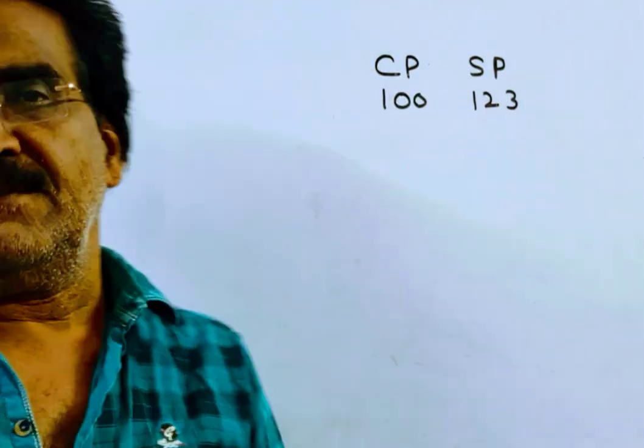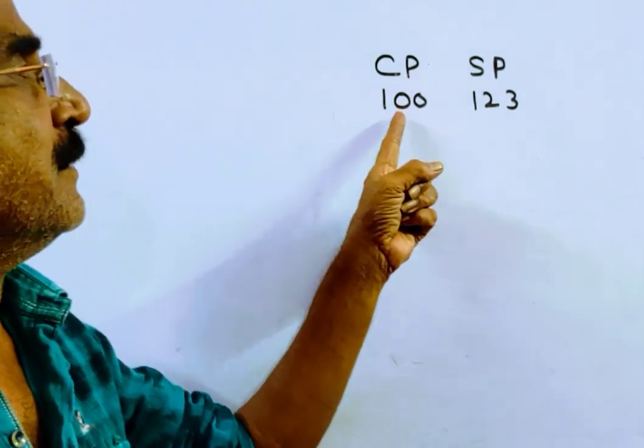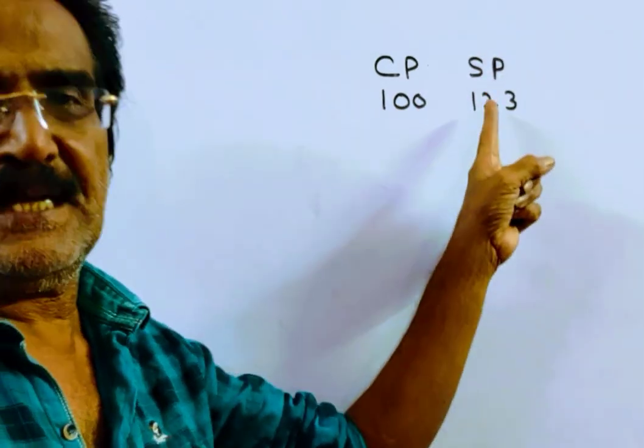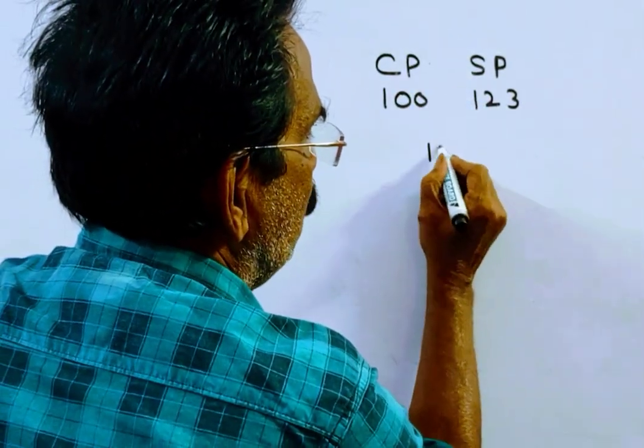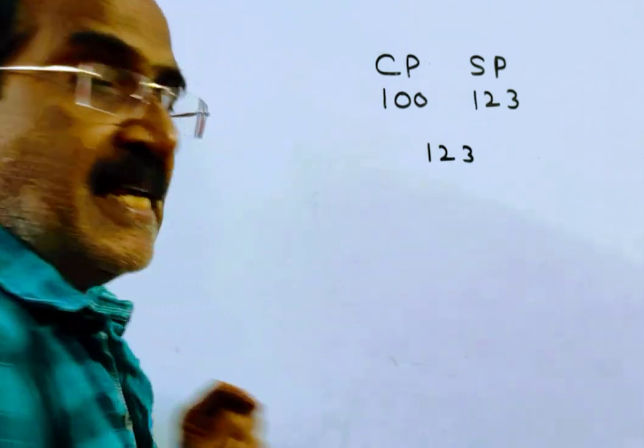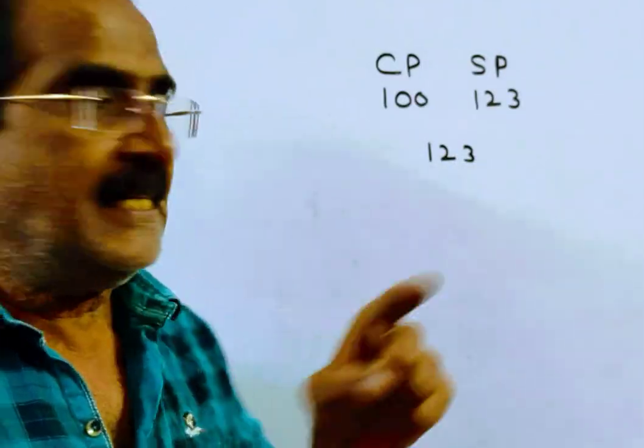Makes a profit of 23 percent means if cost price is 100, selling price is 123. This selling price 123 is after a discount of 18 percent, that means this selling price is equal to 82 percent of the marked price.